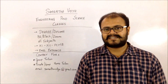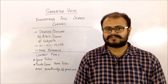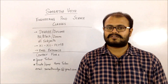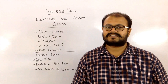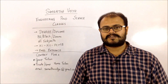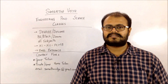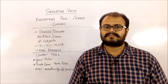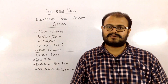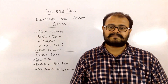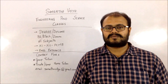If you feel a particular institute is not good for you, keep that institute with your branch choice lower in your options. When filling up the option form, decide on the number of options you would like to fill. You can fill up to a maximum of 300 options and must fill a minimum of at least one.